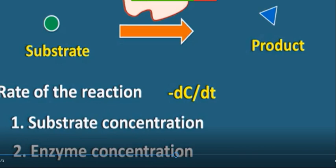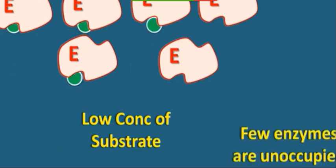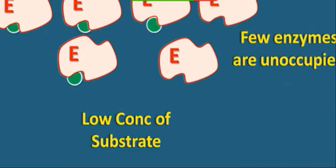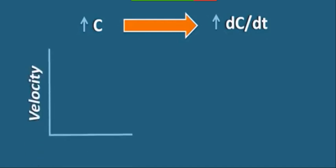The rate of reaction depends first on substrate concentration and second on enzyme concentration - how much substrate there is and how much enzyme there is. You have enzymes and you have substrate, but if the substrate is a little less, the substrate will not bind fully with the enzymes. If you plot a graph of velocity versus substrate, we get a linear graph when we have a small substrate concentration.